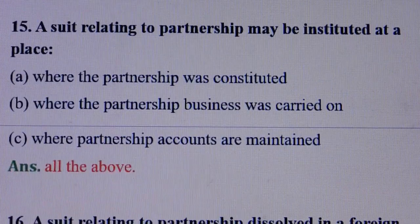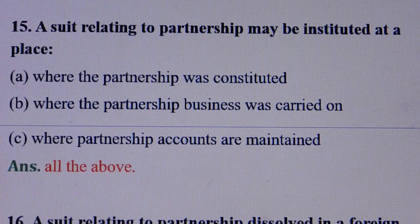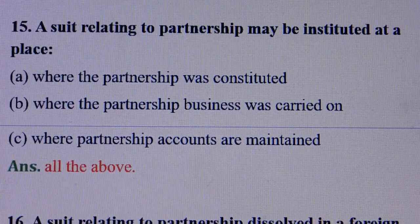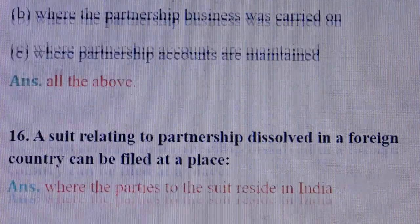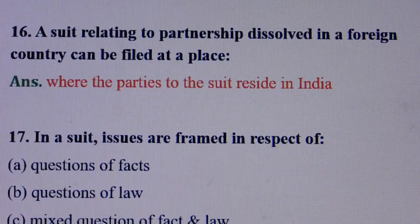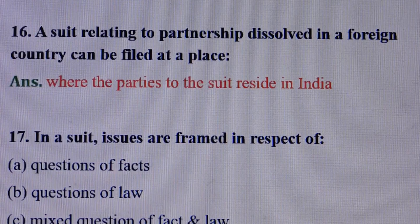Question number 15: A suit relating to partnership may be instituted at a place — answer is: all of the above. That means: Option A — where the partnership was constituted; Option B — where the partnership business was carried on; Option C — where partnership accounts are maintained. Question number 16: A suit relating to a partnership dissolved in a foreign country can be filed at a place — answer is: where the parties to the suit reside in India.